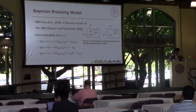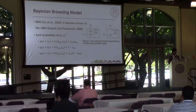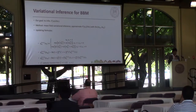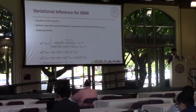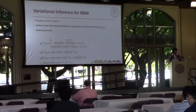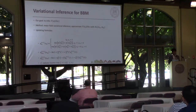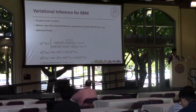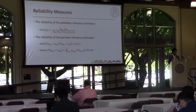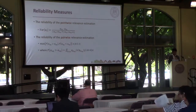The joint distribution of the examination and click can be represented in these formulas. Because we want to capture the uncertainty in relevance estimation, instead of using point estimators such as maximum likelihood estimation or EM to gather point estimates of the relevance parameter alpha, in this study we try to infer the posterior distribution of alpha. We use mean-field variational methods and approximate the posterior distribution of each alpha with a beta distribution with two parameters. Here are the formulas we use to update the variational parameters. After training the model with the variational inference method, we can get the parameters of the beta distribution. Then we can measure the point-wise precision by computing the variance of alpha.